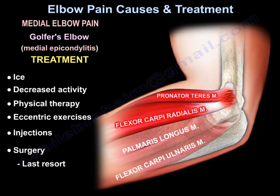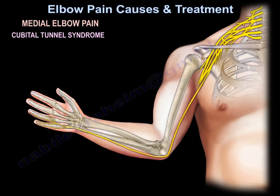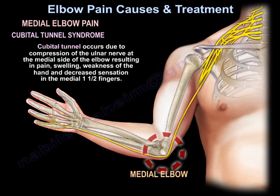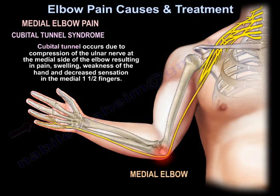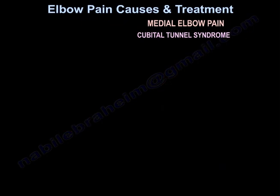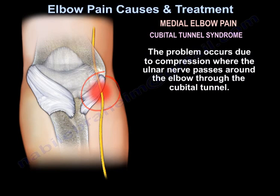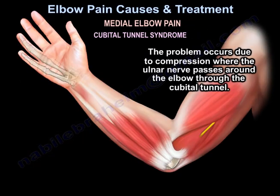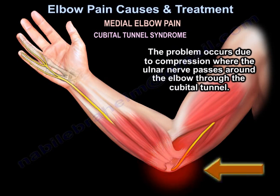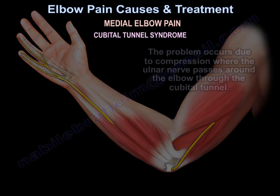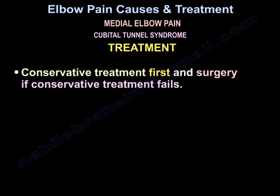Surgery is the last resort. Cubital tunnel syndrome occurs due to compression of the ulnar nerve at the medial side of the elbow, resulting in pain, swelling, weakness of the hand, and decreased sensation in the medial one and a half fingers. The problem occurs due to compression where the ulnar nerve passes around the elbow through the cubital tunnel. Treatment is conservative first, and surgery if conservative treatment fails.